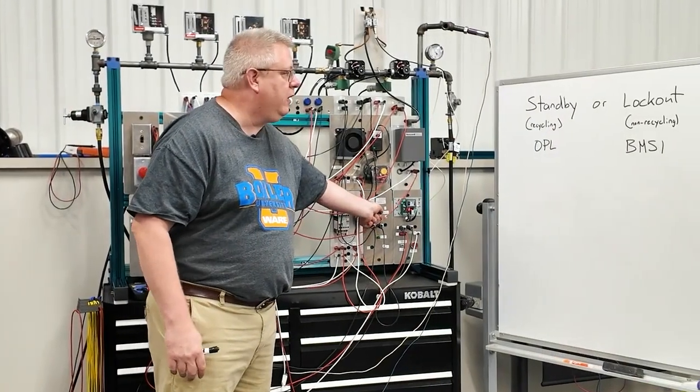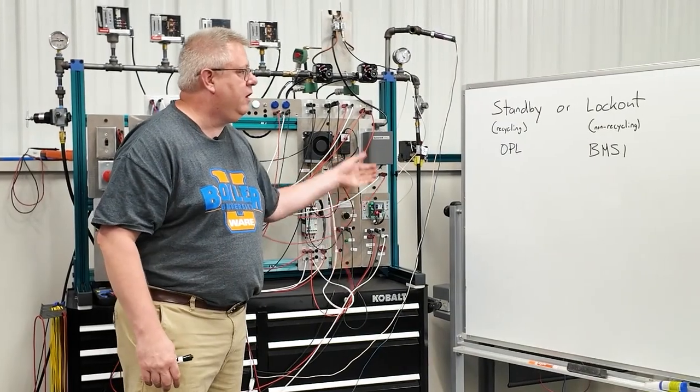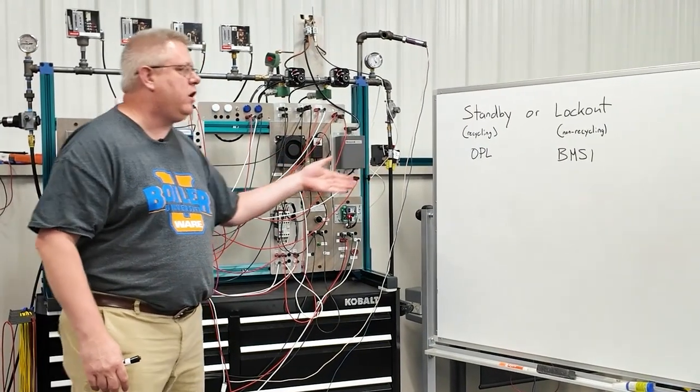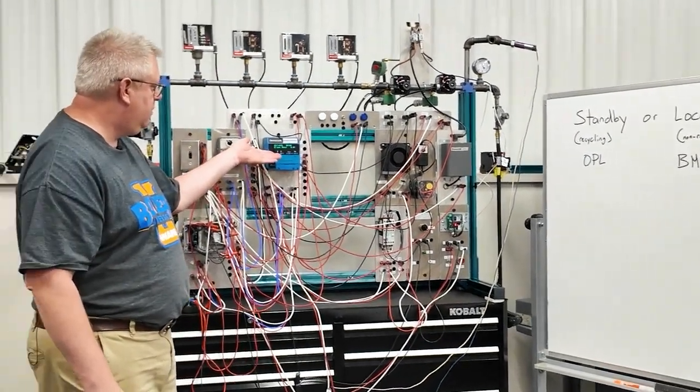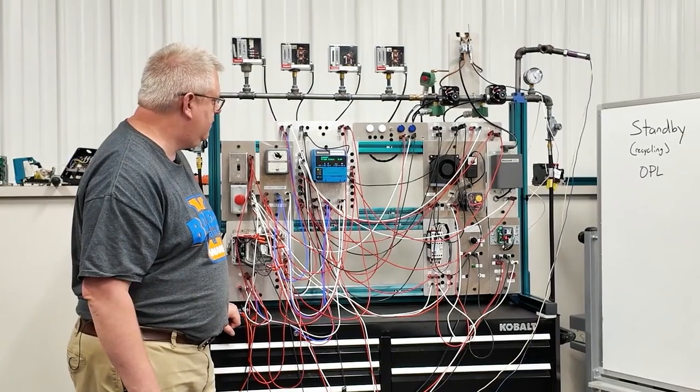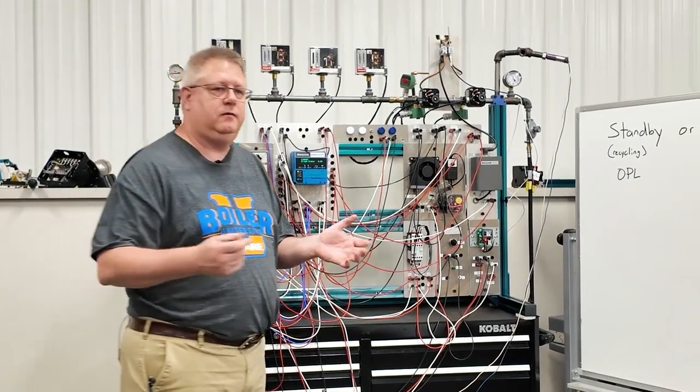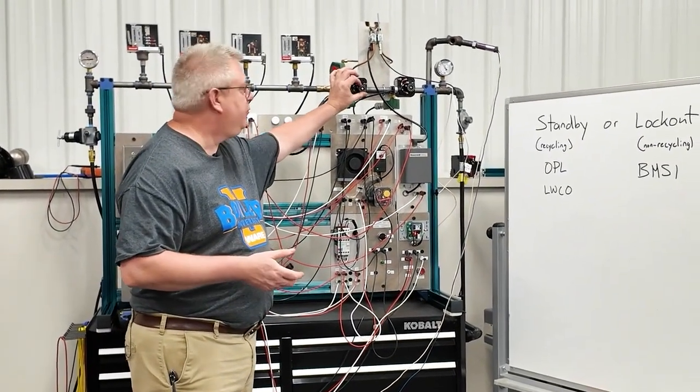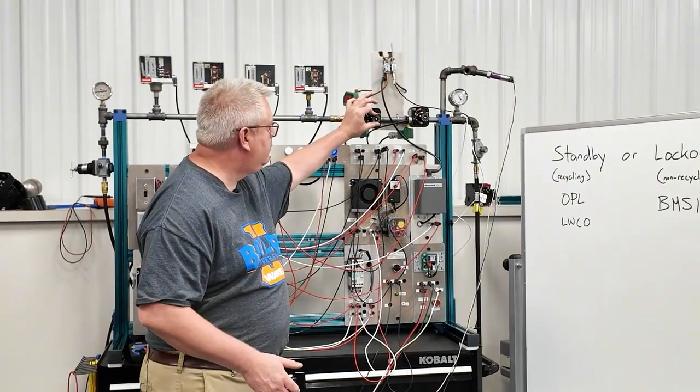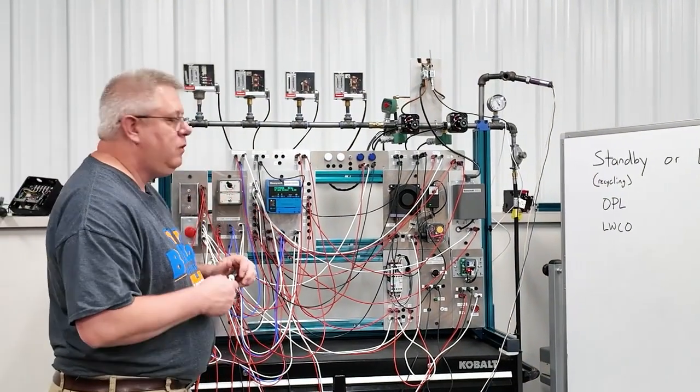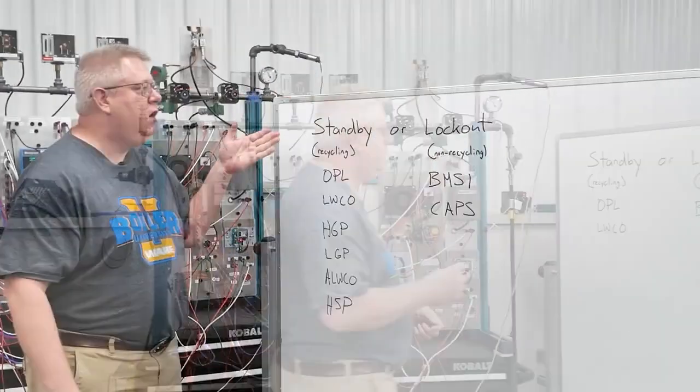If we blow down the boiler and trip it on the primary low water cutoff, we're back to standby. Now I'm going to trip the high gas pressure switch. We've gone into standby again.